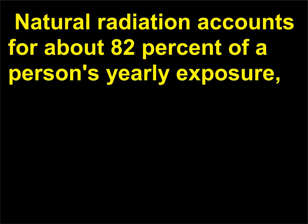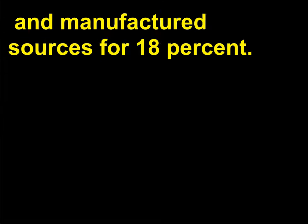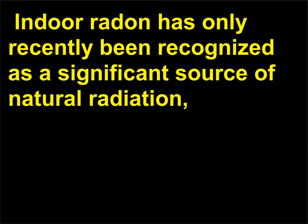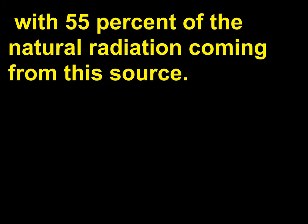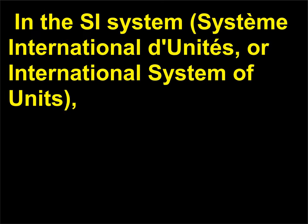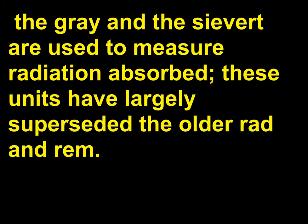Natural radiation accounts for about 82% of a person's yearly exposure, and manufactured sources for 18%. Indoor radon has only recently been recognized as a significant source of natural radiation, with 55% of the natural radiation coming from this source. In the SI system (Système International d'Unités, or International System of Units), the gray and the sievert are used to measure radiation absorbed; these units have largely superseded the older rad and rem.